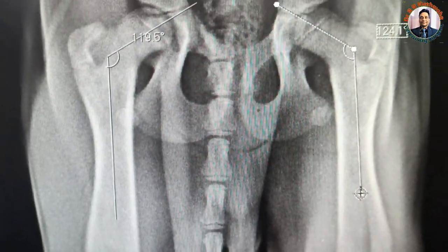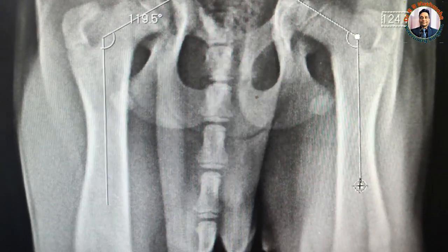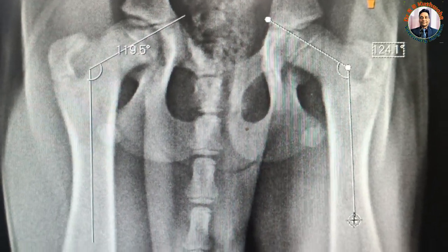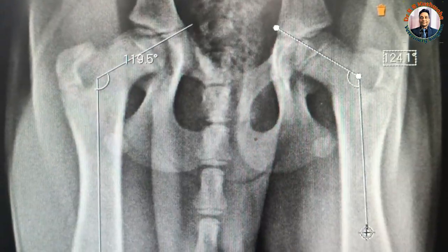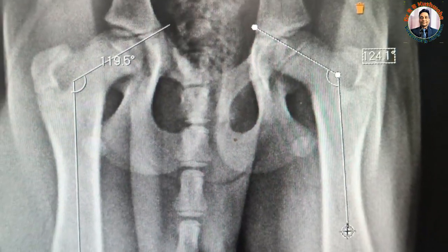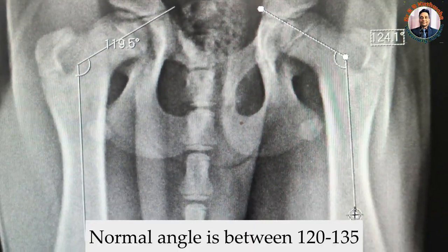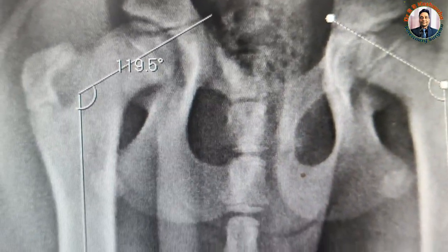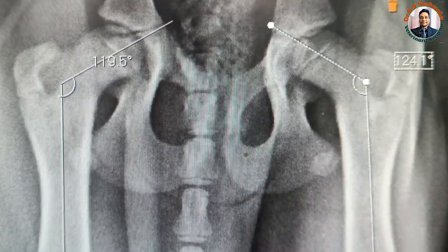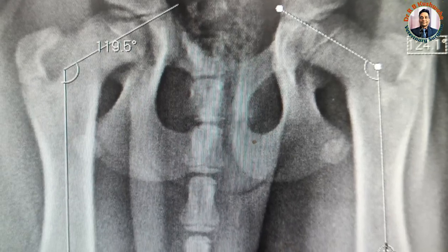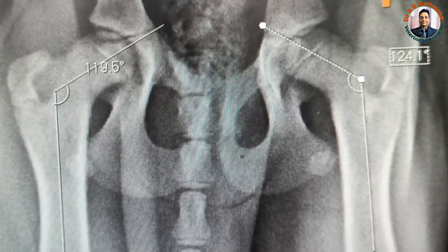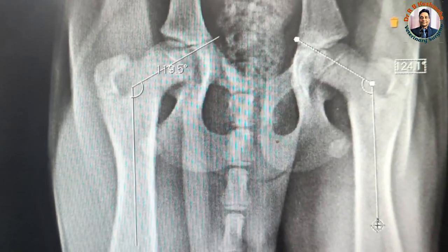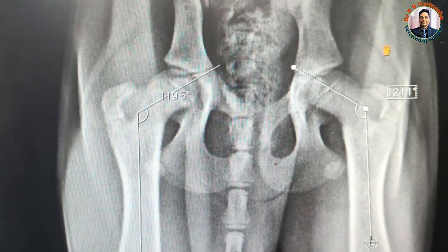The normal femoral head neck shaft angle should not be more than 135 degrees, although the range is between 120 to 135. So this 119.5 is equivalent to 120, and we can consider it at the lower margin of this angle. Although in this case, there is no dysplasia.